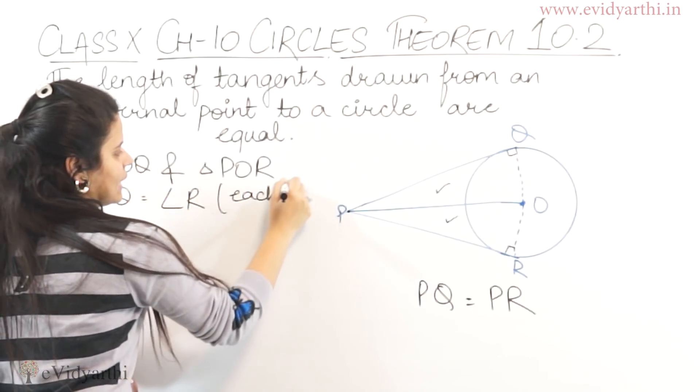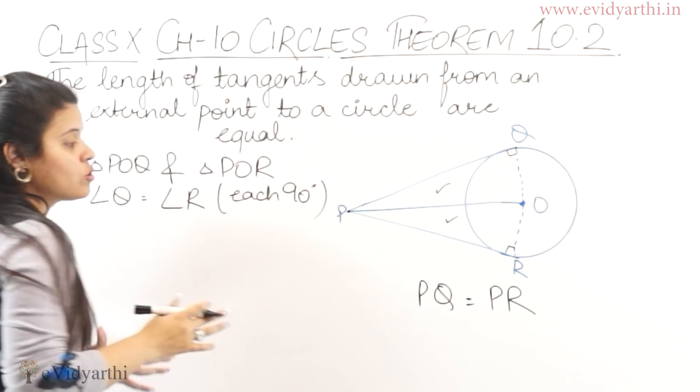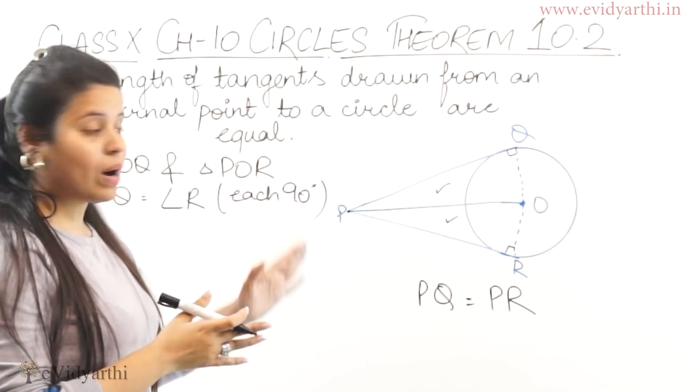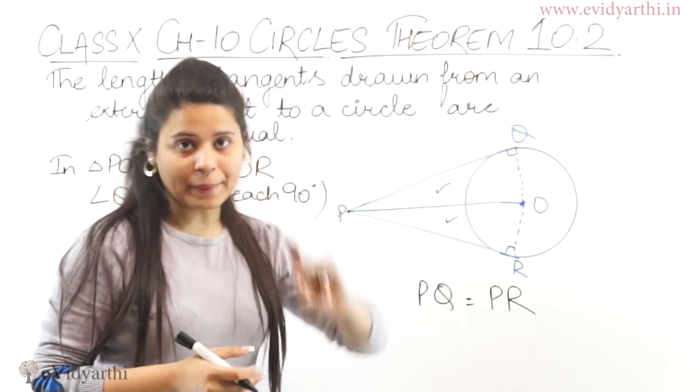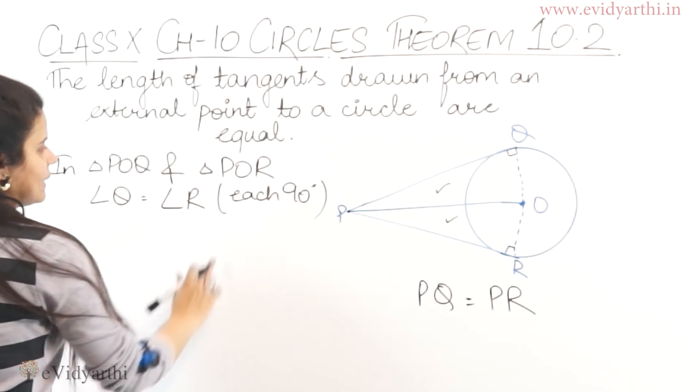Reason: each 90 degrees. Or you can also mention Theorem number 10.1, because the radius and the tangent are perpendicular. Therefore, these angles are 90 degrees.